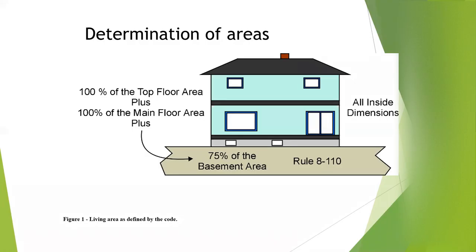When it comes to determining the areas, this is found in Rule 8-110. It says the living area designated in 8-200 and 8-202 shall be determined from the inside dimensions and include: 100% of area on the ground floor, 100% of areas above the ground floor used for living purposes, and 75% of the area below the ground floor.